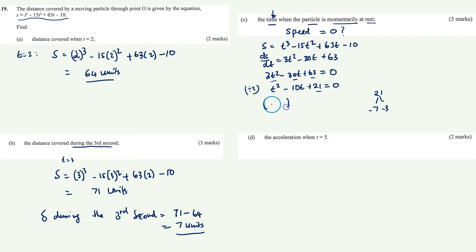So inside my brackets, I have t minus 7 and t minus 3 equals 0. If you take the first bracket and make it equal to 0, you get t equals 7. The second bracket gives t equals 3. So this object is at rest when t equals 3 and when t equals 7.